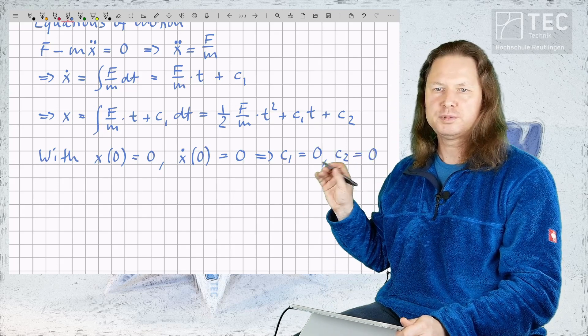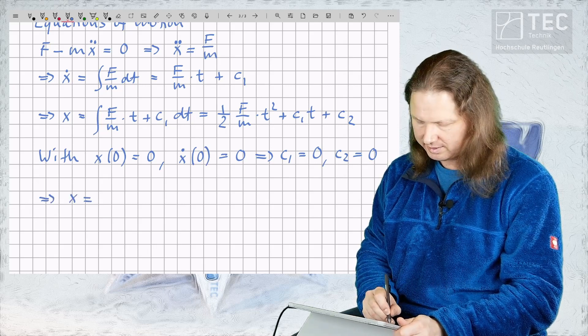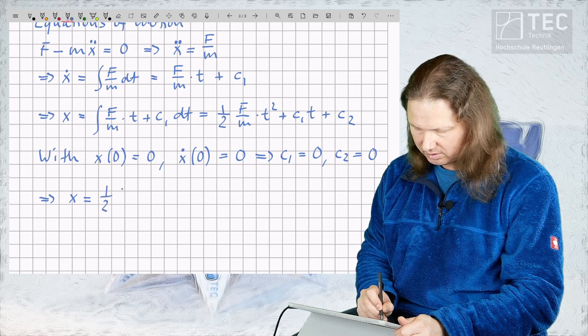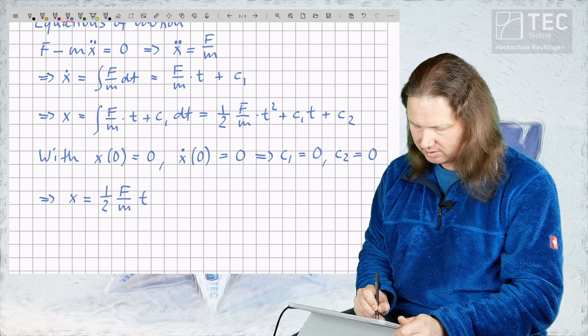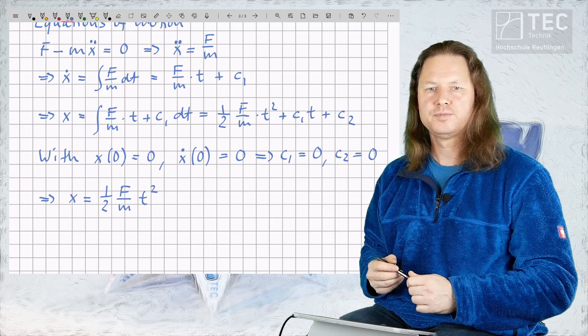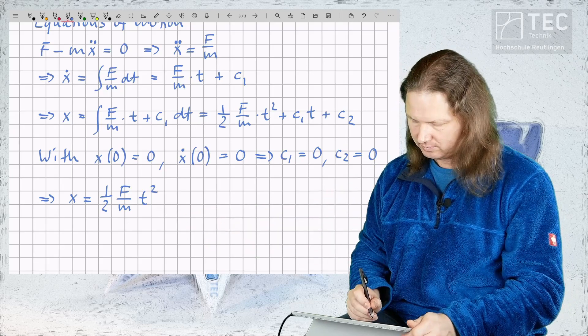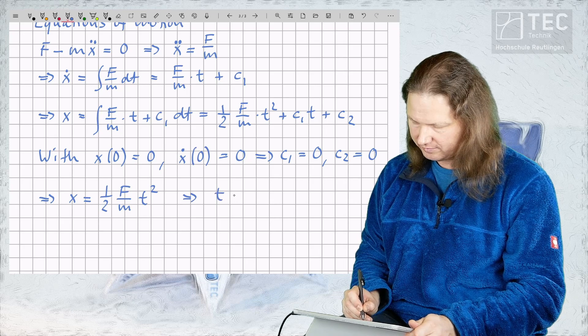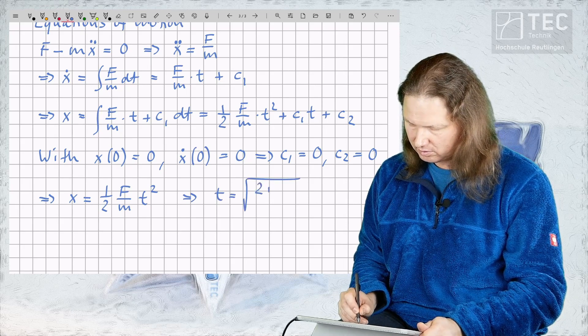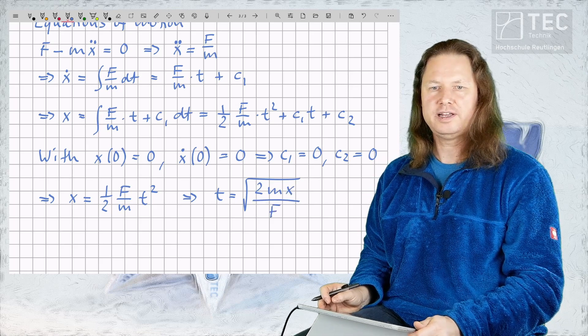So the specific solution to our problem is the position x can be calculated with the formula one half F over M t squared. Now finally let's solve this equation for the time t, that is we isolate t and get it on the left hand side so t is equal to the square root of 2Mx over the accelerating force F.